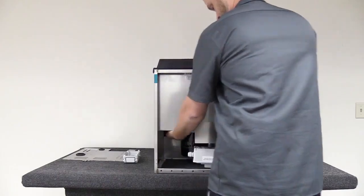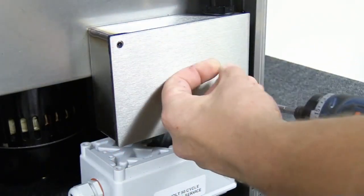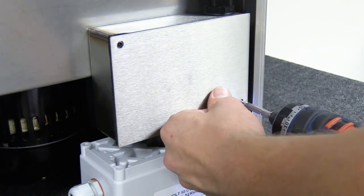Place the unit on its front side and unscrew the two machine screws to expose the microswitch and riser cable assembly. Place these screws aside for reassembly at the end of the video.